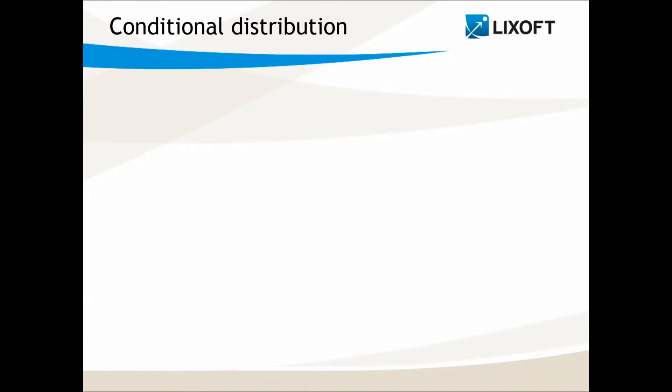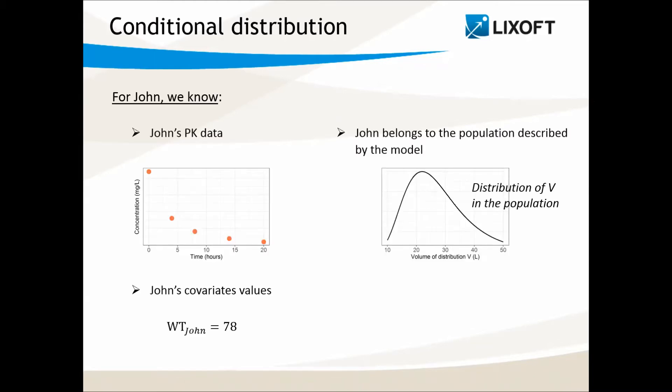The conditional distribution is defined for each individual. Let's take the example of the volume of distribution V for an individual called John. For John, we know the following: his PK data, his covariate values, for instance his weight, which in the model is known to influence the volume.